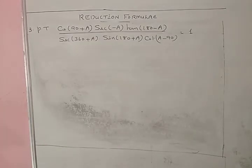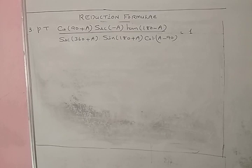Third problem: prove that cos(90 + A) times sec(minus A) times tan(180 - A) divided by sec(360 + A) times sin(180 + A) times cot(A - 90) equals 1. cos(90 + A) is a standard result: minus sin A. sec(minus θ) = sec θ. tan(180 - A) by standard result equals minus tan A.